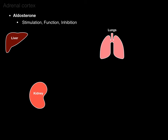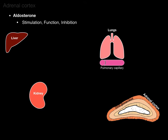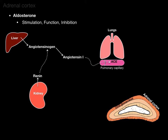The liver produces angiotensinogen, which flows throughout the blood. Angiotensinogen is primarily inert until acted upon by an enzyme. When blood volume, pressure, and sodium levels drop, the kidneys sense this and secrete renin — an enzyme that cleaves angiotensinogen to create angiotensin 1. When angiotensin 1 flows into the pulmonary capillary, it encounters ACE — angiotensin-converting enzyme — which converts angiotensin 1 into angiotensin 2.